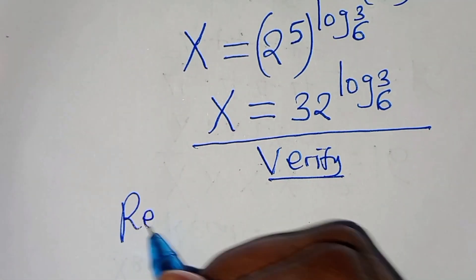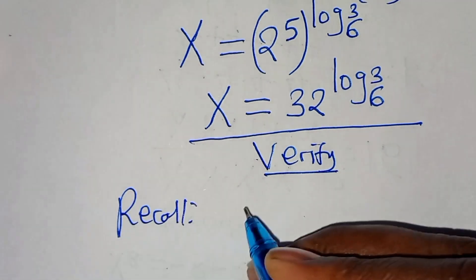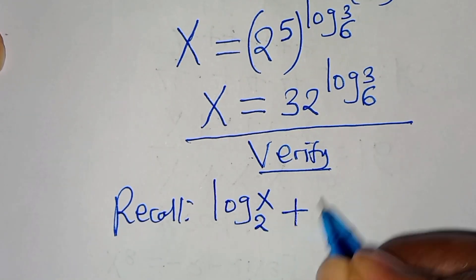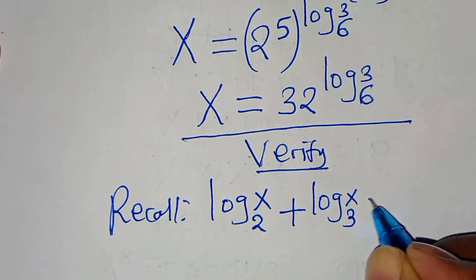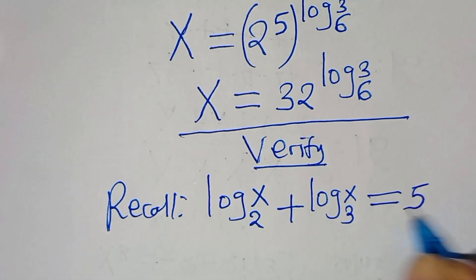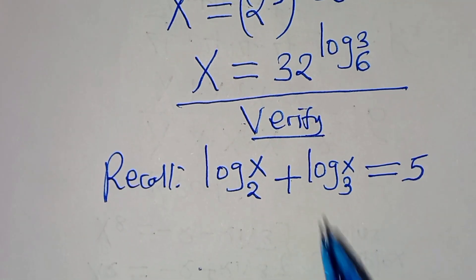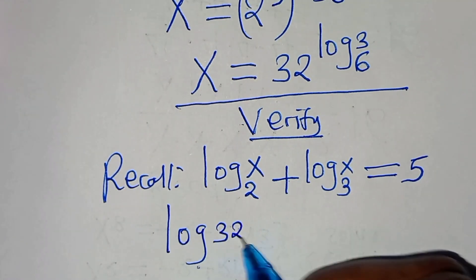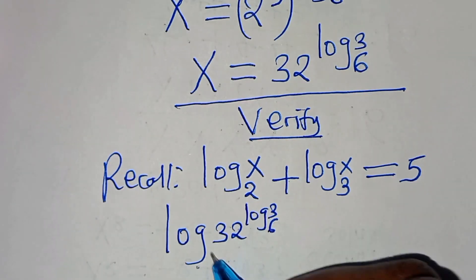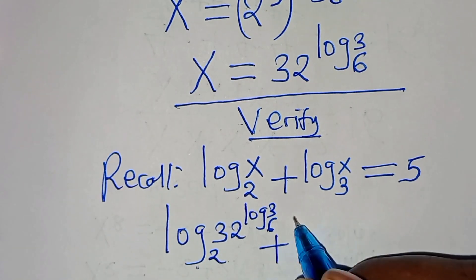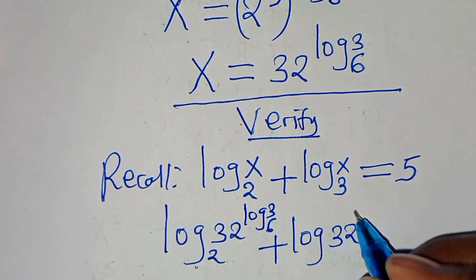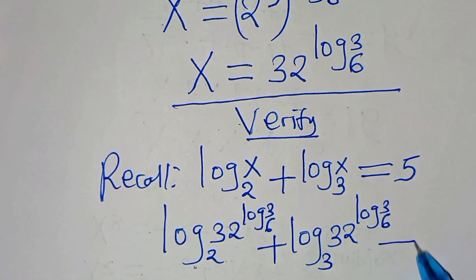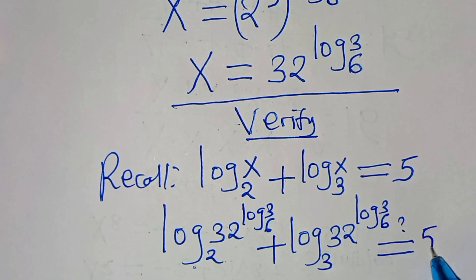Recalling the original equation: log base 2 of x plus log base 3 of x should equal 5. Substituting x equals 32 to the power of log base 6 of 3, we get log base 2 of (2^5 raised to log base 6 of 3) plus log base 3 of (2^5 raised to log base 6 of 3), which should equal 5.